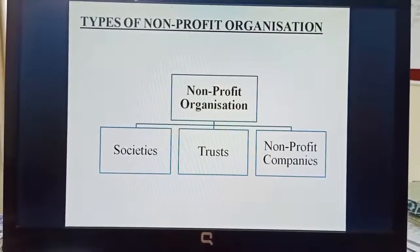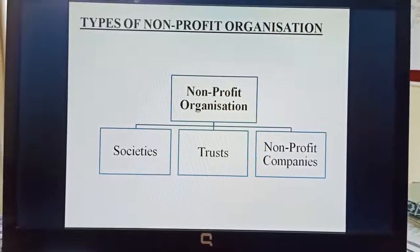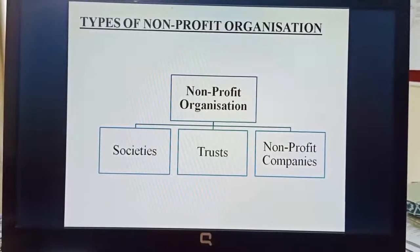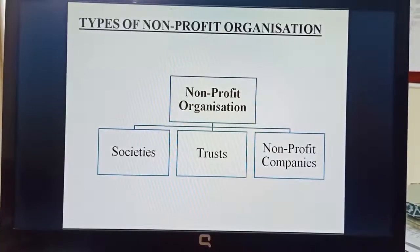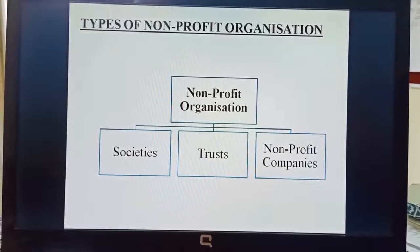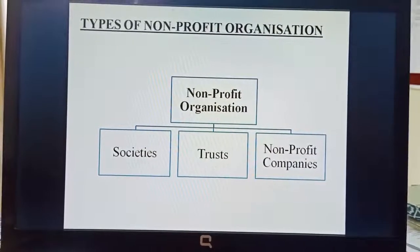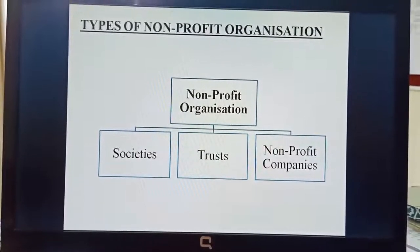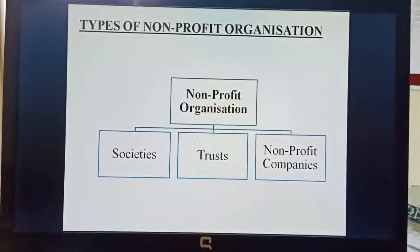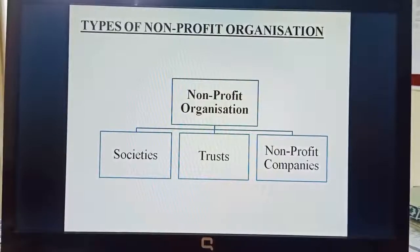There are certain types in which NPO can be formed. Non-profit organizations can be set up in different types. The three types are: number one, Societies; second, Trusts; and third, Non-Profit Companies. Let us discuss these topics in detail.